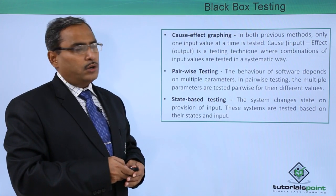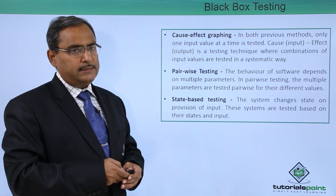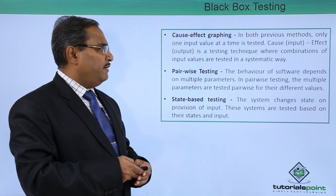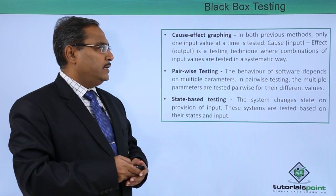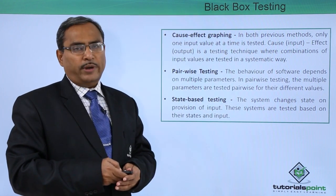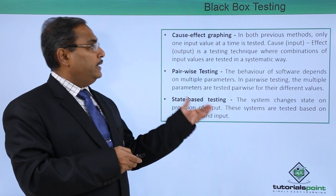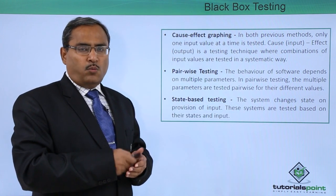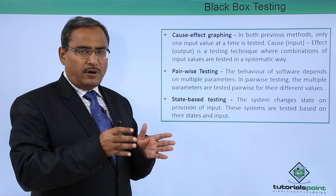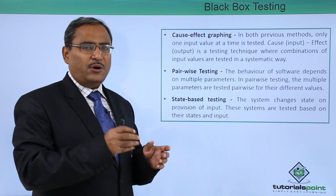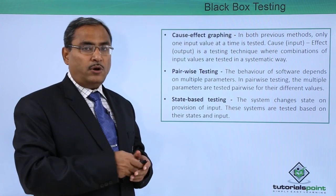The next technique is cause and effect graphing. In both previous methods, only one input value at a time is tested. Here, cause means input and effect means output. It is a testing technique where combinations of input values are tested in a systematic way. In earlier cases we considered one representative value per class or the lower and upper boundary limits — only those were tested, not all values. But in cause and effect graphing, combinations of multiple input values are provided and the system is tested on them.